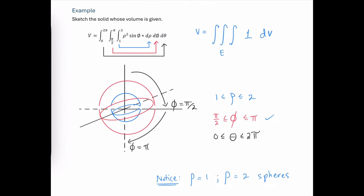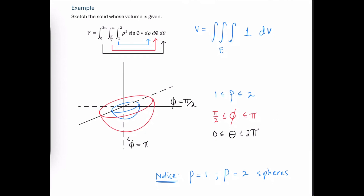Let's remove the pieces that are not part of our volume to clean up the image. When we take into consideration that theta goes from 0 to 2 pi — remember, theta is measured from the positive x-axis moving around in the counterclockwise direction — we get the entire hemispheres all the way around.